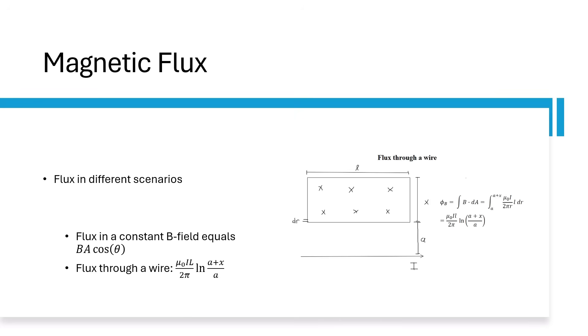Our first topic in this unit is magnetic flux. Like electric flux, magnetic flux is the integral of B-field dot dA. Let's look at flux in a few different situations. Flux through a closed surface is always zero because magnetic field lines never form monopoles.